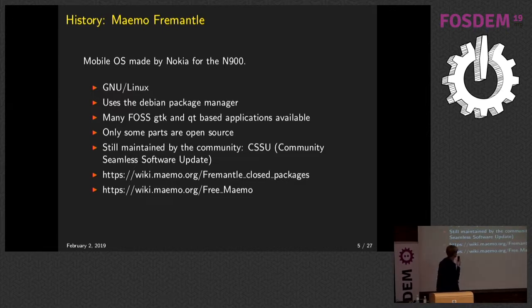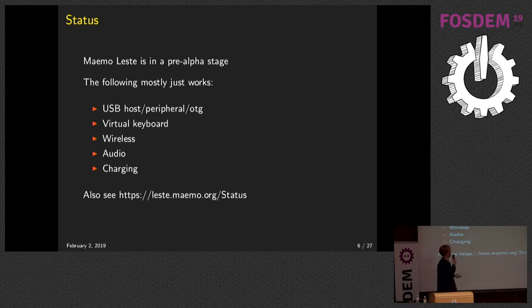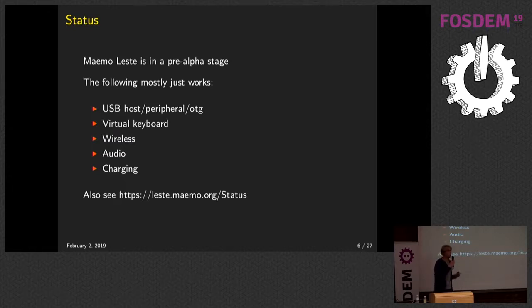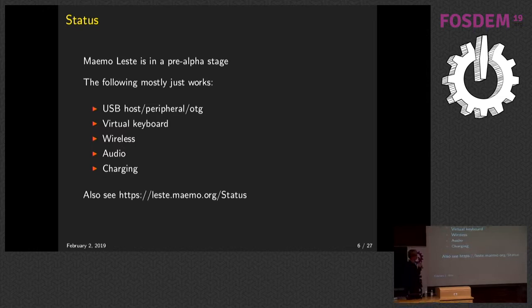There are some parts that are unfortunately not open source, which is what we're trying to fix. We're still in the pre-alpha stage, but for several devices the following already just works: USB host mode on the go if the device supports it, a virtual keyboard, a UI for wireless, audio most of the time, and charging. Average battery life on the N900 is around 17 hours, which is not very good, but there's a lot we can improve. For more software status, you can see the wiki page.